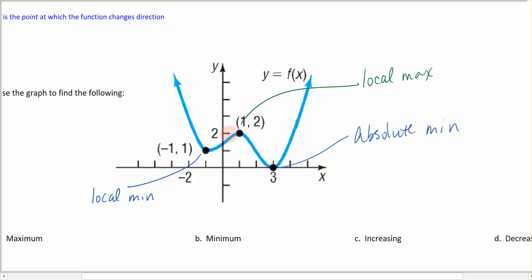We come down, we change directions, we go up, we change directions, we go down, we change directions, we go up. Every time I change directions from increasing to decreasing I have some sort of max or min.